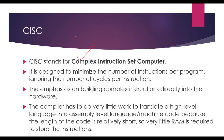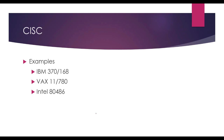CISC — Complex Instruction Set Computer — is designed to minimize the number of instructions per program, ignoring the number of cycles per instruction. So complex instructions are available directly; for example, if you have a multiplication instruction available, you can use it directly rather than building it from addition instructions. The emphasis is on building complex instructions directly into the hardware, so the compiler has to do very little work to translate high-level language into machine code, and very little RAM is required to store the instructions. Examples of CISC processors are: IBM 370, VAX-11, and Intel 486.